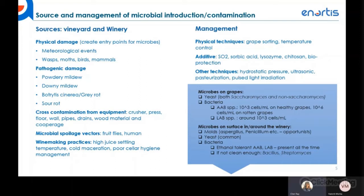In the winery, you tend to find a combination of molds, yeasts, and bacteria. Lactic acid bacteria and acetic acid bacteria, both ethanol-tolerant, are common throughout the whole winemaking process. Management of microbial contamination relies on physical techniques such as sorting and temperature control, or additives to inhibit microbial growth — through addition of sulfur dioxide, lysozyme, sorbic acid, chitosan, or other forms of bioprotection. Alternative techniques include hydrostatic pressure, pasteurization, or UV light irradiation, though these carry additional cost.